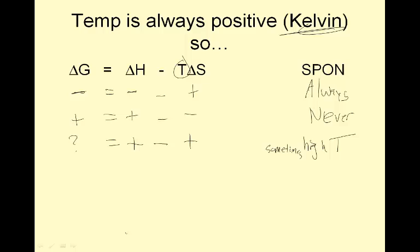What if I wanted it to be spontaneous only at a low temperature, like freezing? In order to freeze, you have to release energy. Liquid water releases energy to freeze, so delta H would be negative. And if I go from a liquid to a solid, disorder decreases — it becomes more ordered. So a negative minus a negative is sometimes spontaneous, but in this case it would be at a low temperature.